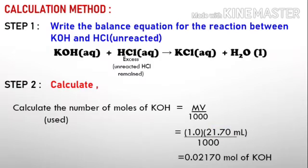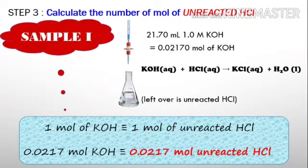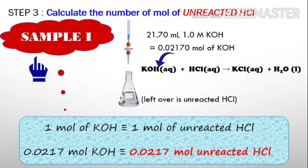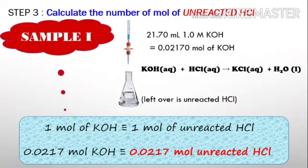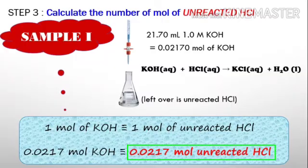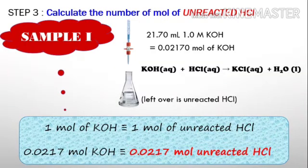In step number three, we calculate the number of moles of unreacted HCl. 21.7 mL of 1.0 molar KOH gives 0.02170 mol of KOH. Based on the equation that relates KOH and HCl, 1 mole of KOH is equivalent to 1 mole of unreacted HCl. So if you have 0.02170 mol of KOH, then 0.02170 times 1 divided by 1, the number of unreacted HCl is also 0.02170 mol.